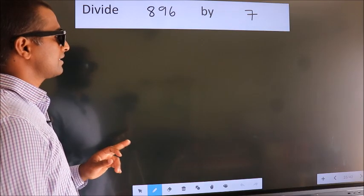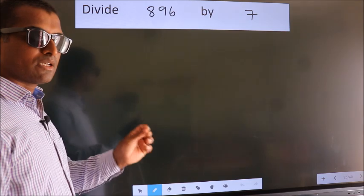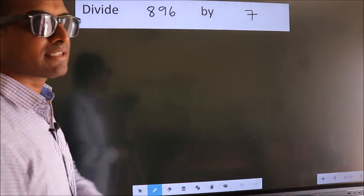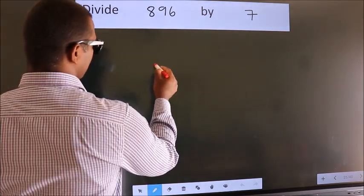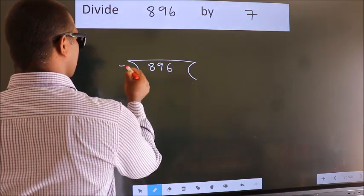Divide 896 by 7. To do this division, we should frame it in this way: 896 here, 7 here.